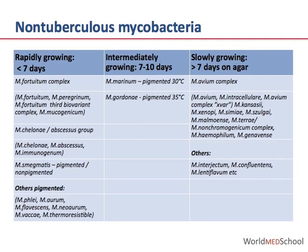Non-tuberculous mycobacteria were broadly characterized into two main groups: rapid-growing mycobacteria and slowly-growing mycobacteria. The rapid growers are those that will grow on sheep blood agar or chocolate agar in under seven days. The main species within the rapid-growing group include the Mycobacterium fortuitum complex, the Mycobacterium abscessus group, and Mycobacterium smegmatis.